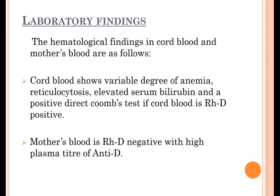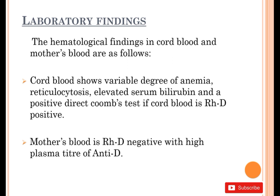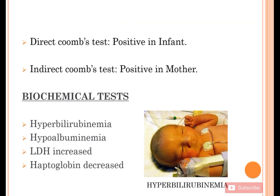Laboratory findings. Hematological findings in cord blood and mother's blood are as follows. Cord blood shows a variable degree of anemia, reticulocytosis, elevated serum bilirubin, and a positive direct Coombs test if cord blood is RHD positive. Mother's blood is RHD negative with a high plasma titer of anti-D. Direct Coombs test is positive in the infant, whereas indirect Coombs test is positive in the mother.